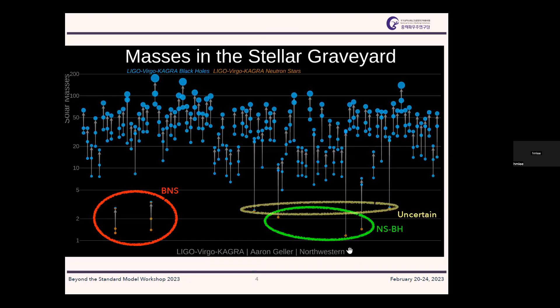These diagrams show the masses of gravitational wave sources. The distinction between black holes and neutron stars is mostly based on estimated masses. If the mass is less than roughly three to five solar masses, these are called neutron stars; if the mass is much larger than five solar masses, they are definitely black holes. Between three and five solar masses, they are called uncertain sources.